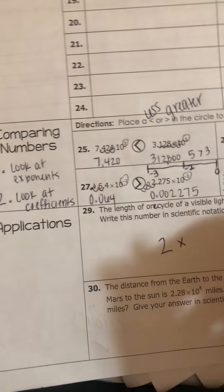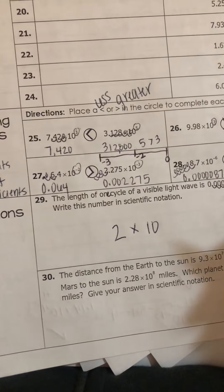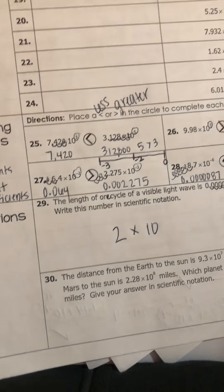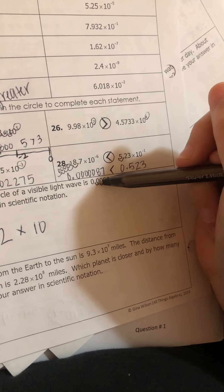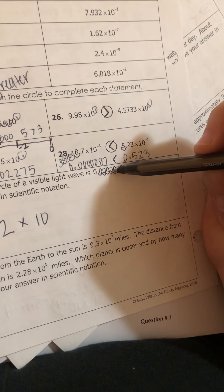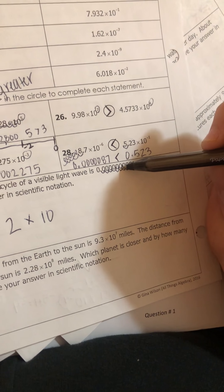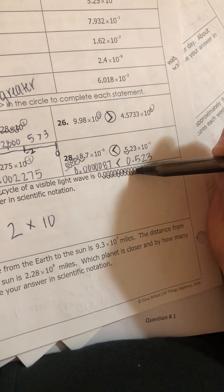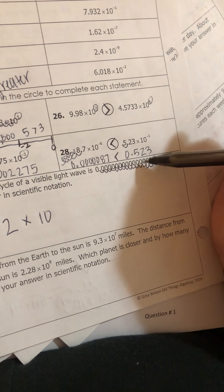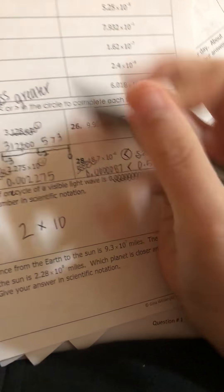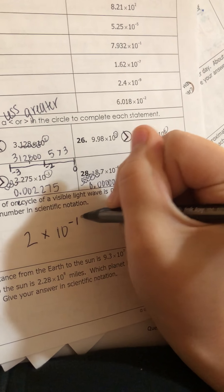So remember that tiny numbers have a negative exponent. Oh shoot, I already forgot how many swoops. 1, 2, 3, 4, 5, 6, 7, 8, 9, 10, 11, 12, 13, 14, 15. So 2 to the negative 15.